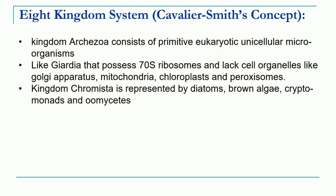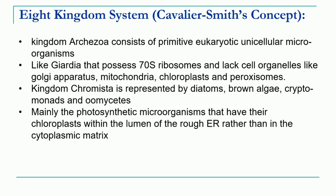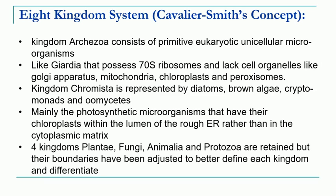The second new kingdom established in the 8-kingdom system is kingdom Chromista. It includes diatoms, brown algae, cryptomonads, and oomycetes — groups which were left out in the previous system and did not have any place. Now they got a new kingdom for themselves. The four kingdoms — Plantae, Fungi, Animalia, and Protista — were retained as in the previous system of classification, but their boundaries are redefined, so each kingdom now has well-defined boundaries for the organisms included.